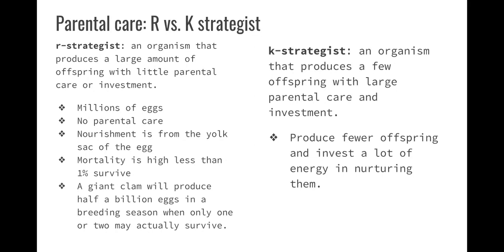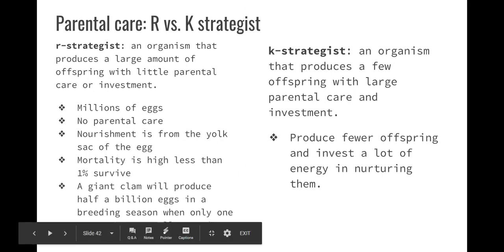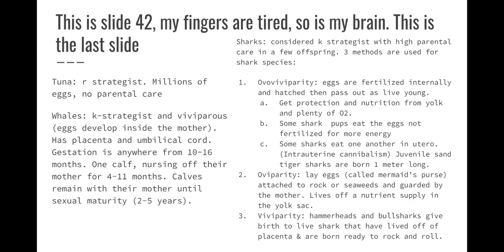K strategists — named with K — reflect the parental care humans have. You have very few offspring because it is so parentally and energy costly; a huge investment financially, emotionally, physically, and mentally. There are very few offspring in their lifetime, and they invest a lot of energy nurturing them. Tuna are R strategists — millions of eggs with no parental care. Whales are K strategists and viviparous — eggs develop inside the mother, they have a placenta and umbilical cord. Gestation is 10 to 16 months; one calf nurses off the mother for about 4 to 11 months. Calves remain with their mother until sexual maturity, with a strong maternal hierarchy.